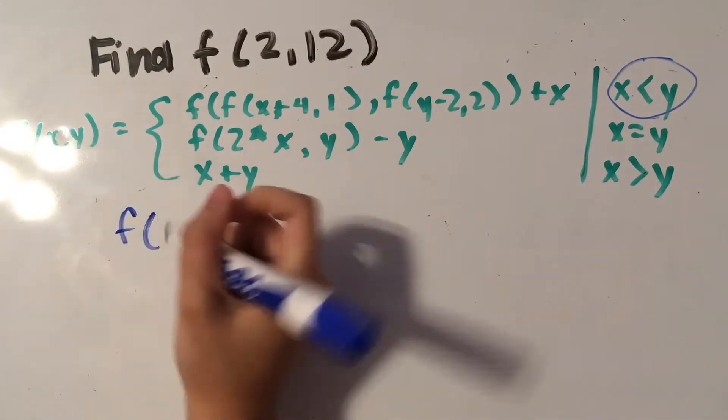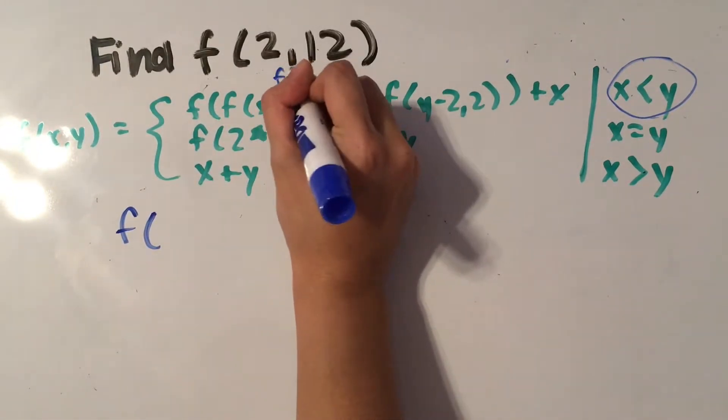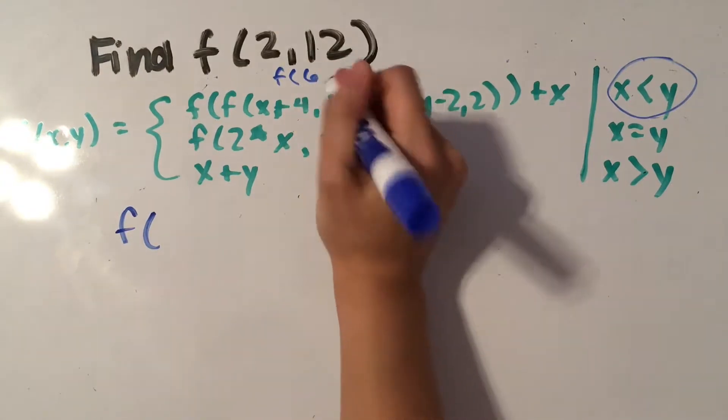So that's f of f of x which is 2 plus 4, so that's going to yield f of 6 comma 1.